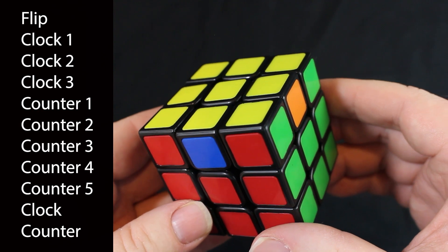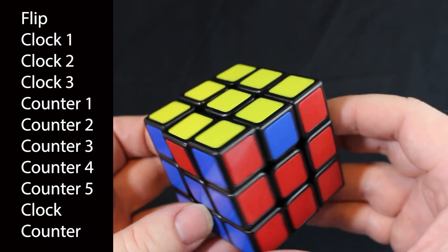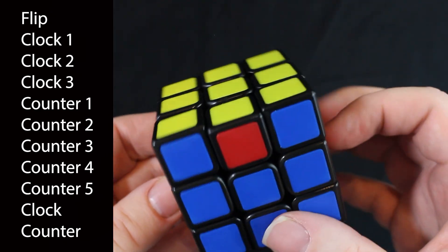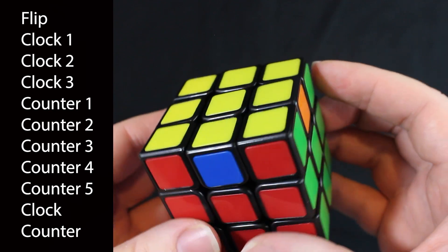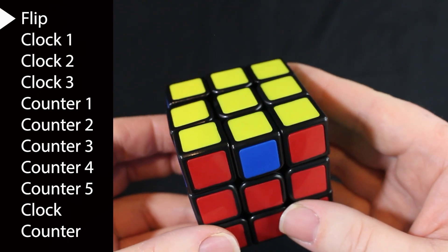So once again, here's an example of what's the first thing we do. We look for the most completed side. And as I spin this around, you'll see that there is no most completed side. They're all the same. So which side do we pick? It doesn't matter. Just pick a random side and let's do the moves.